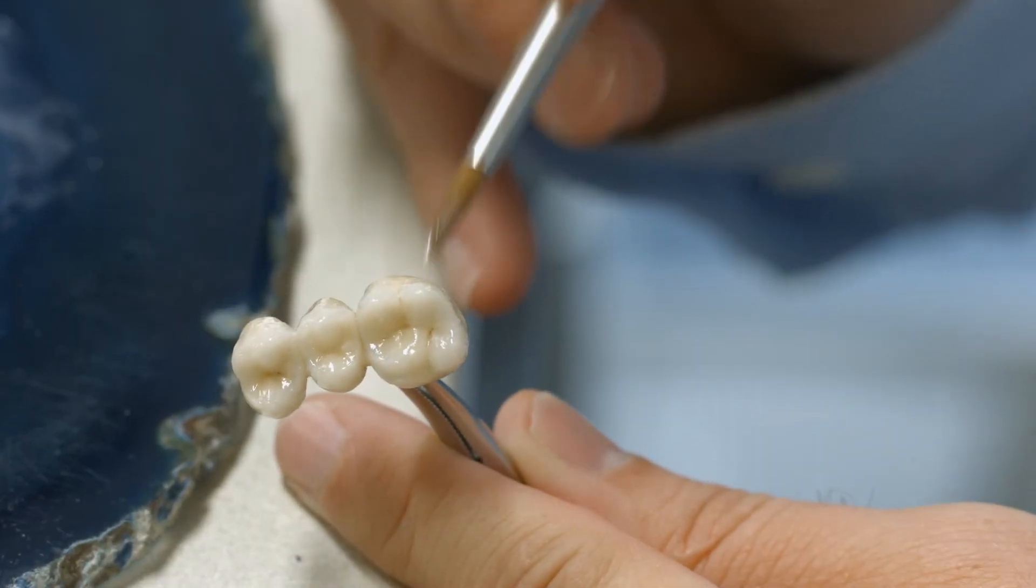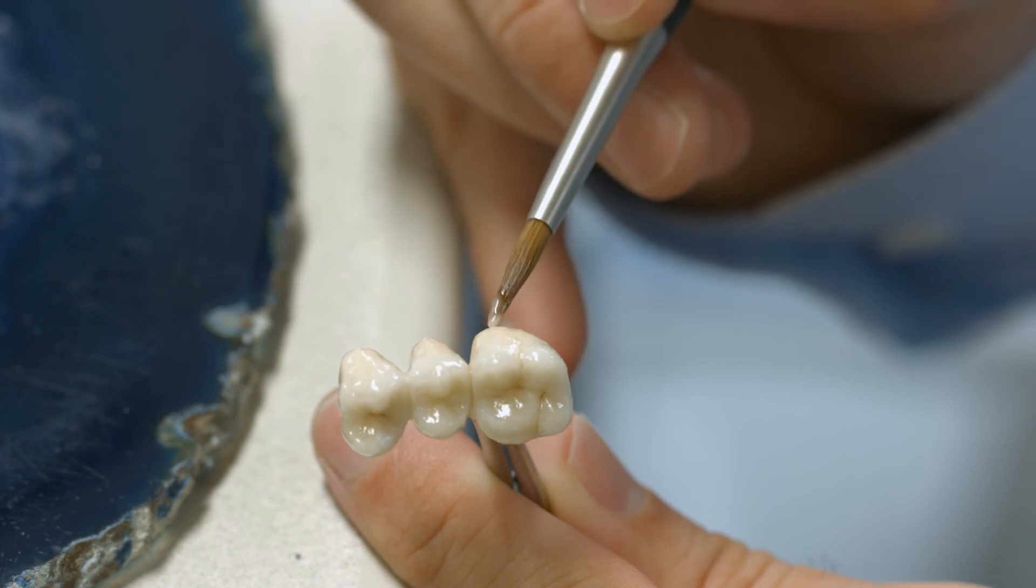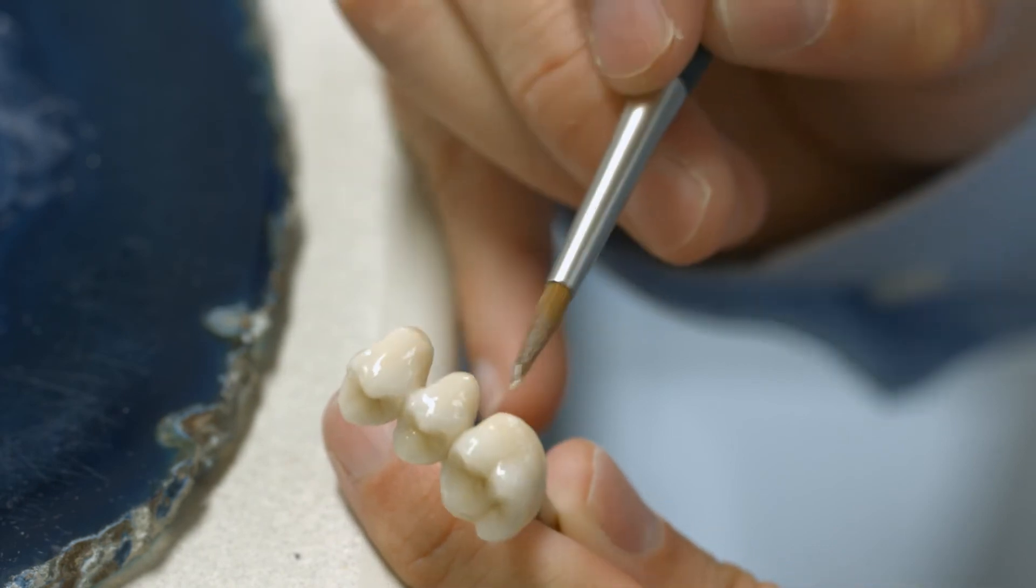If needed, shade adjustments can be made on the applied glaze using IPS Ivocolor shade and IPS Ivocolor Essence materials.